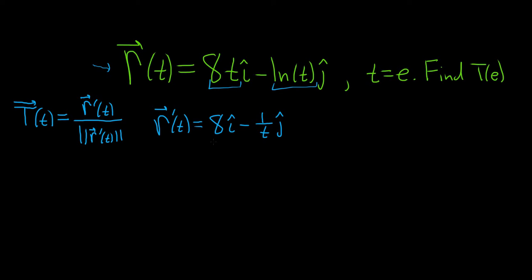OK, now we can go ahead and find the magnitude, or we can plug in e. Let's just go ahead and find the magnitude. So r prime of t, finding its magnitude, this is equal to the square root. And what you do with the magnitude is you square each of the components. So it's 8 squared plus negative 1 over t squared. So this is the square root of 8 squared plus 1 over t squared.